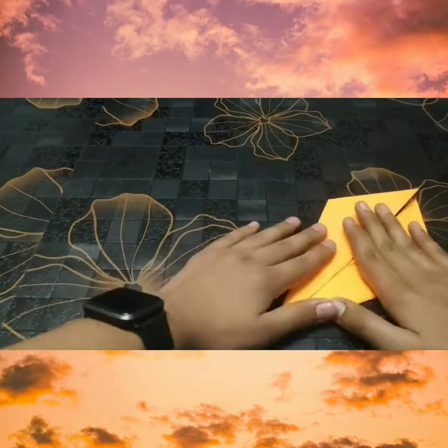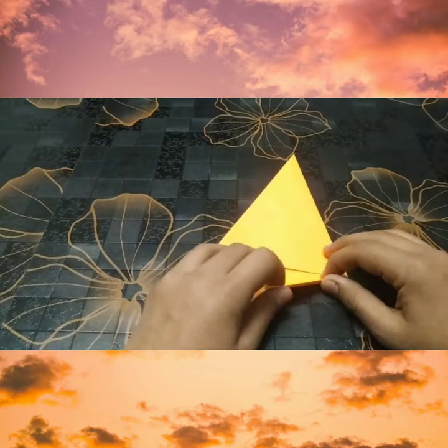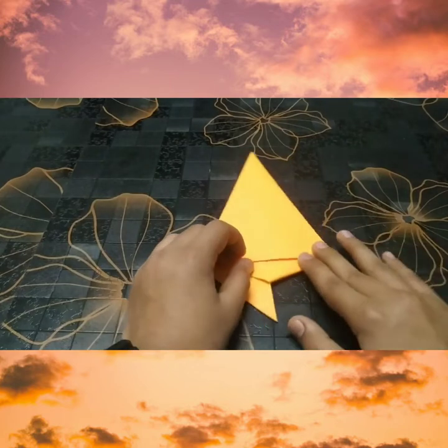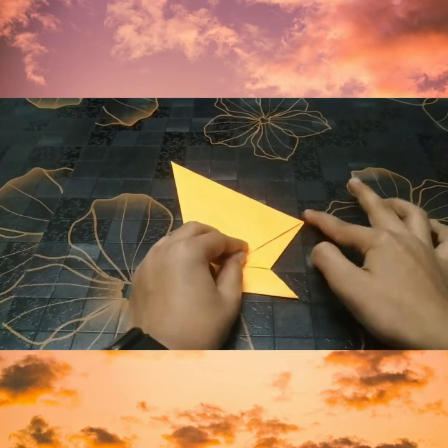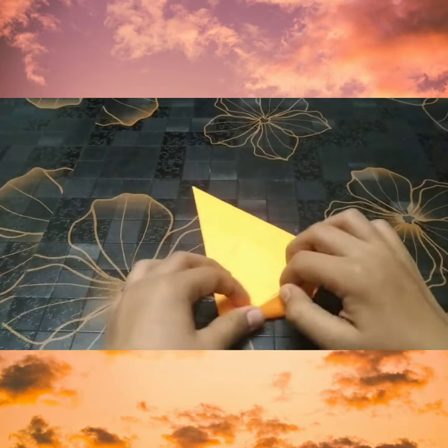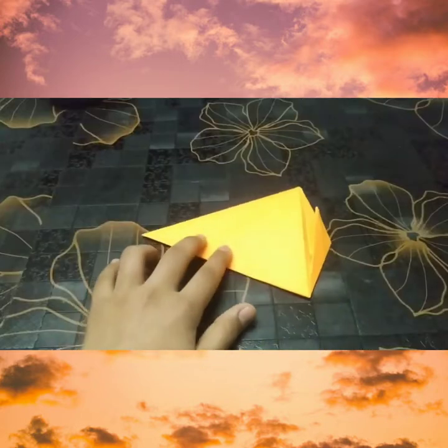Now flip it over and fold this corner, this flap to the edge of that flap. Now repeat on the other flap. Crease it sharply.